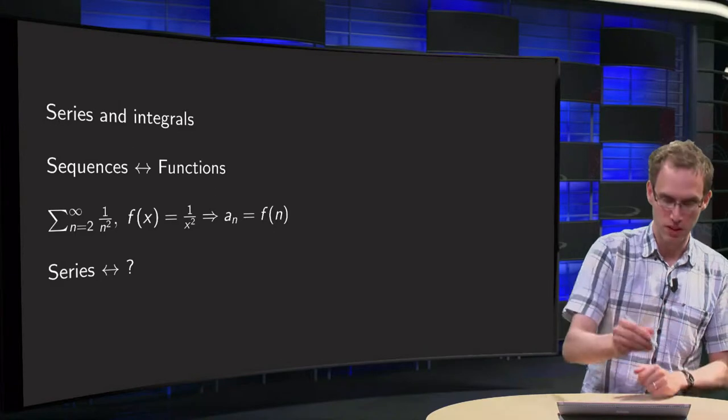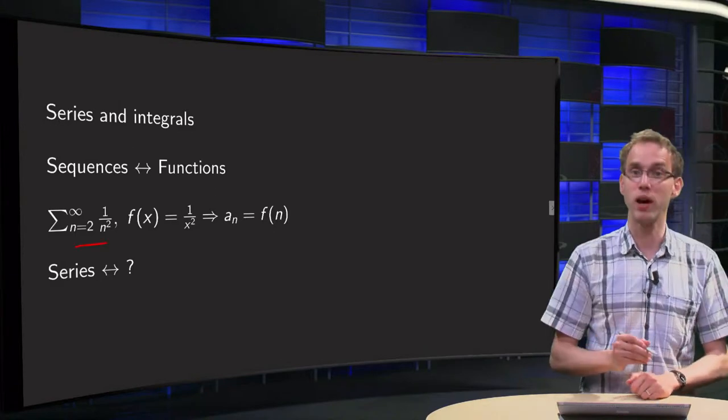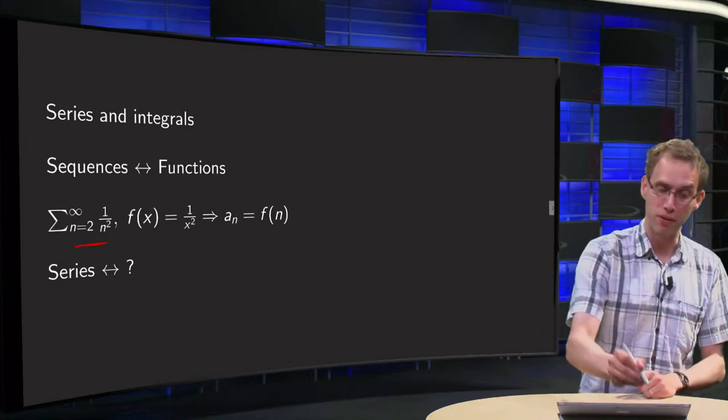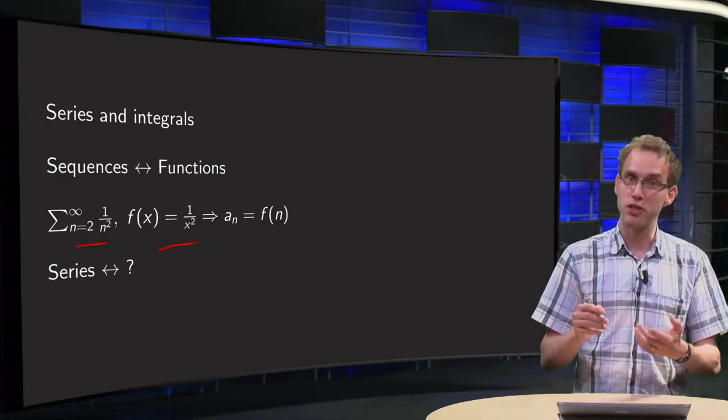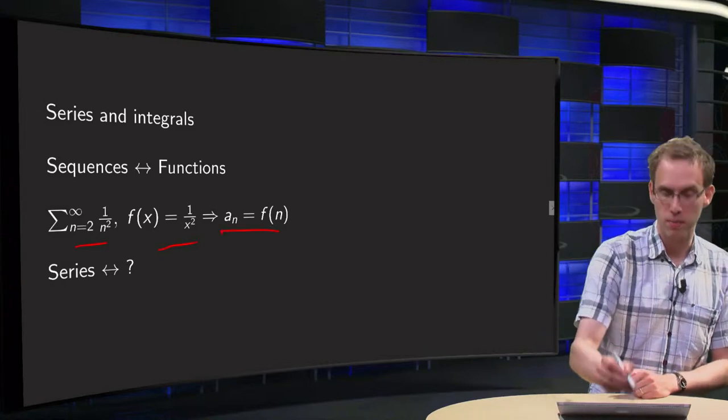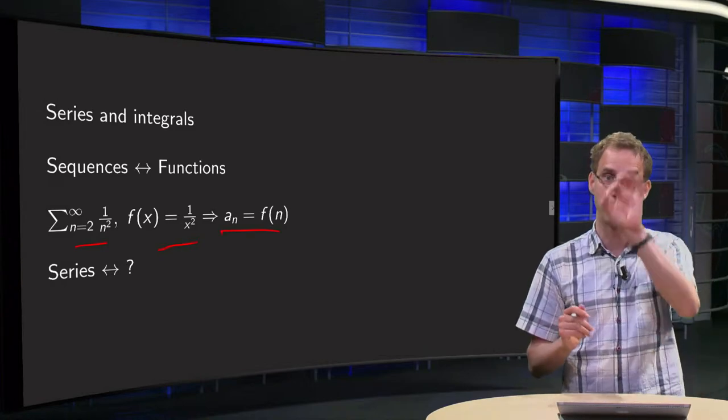Well, suppose we have some sequence 1 over n squared, then we can form the function f equals 1 over x squared, and we get the elements an by evaluating f at the integer points.